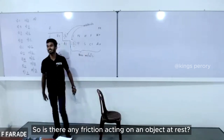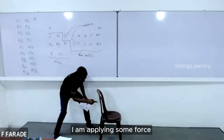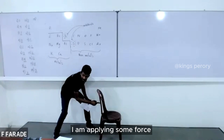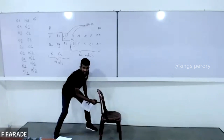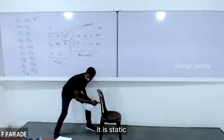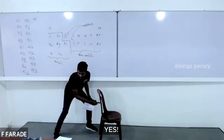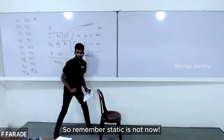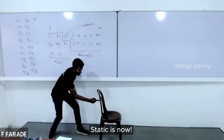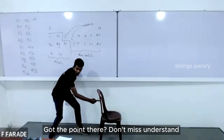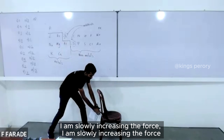Now this is at rest and I am applying some force. It is not moving — it is static. I am applying force but it is not moving. Is there friction? Yes. What type? Static friction. Remember: static friction is not present when the object is simply at rest with no force — static friction acts when force is applied but no motion occurs.